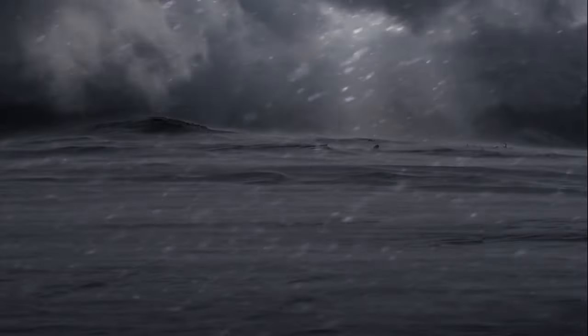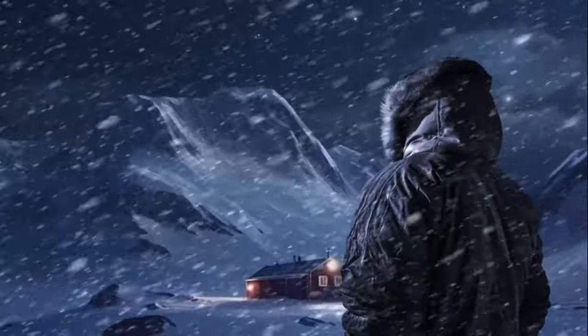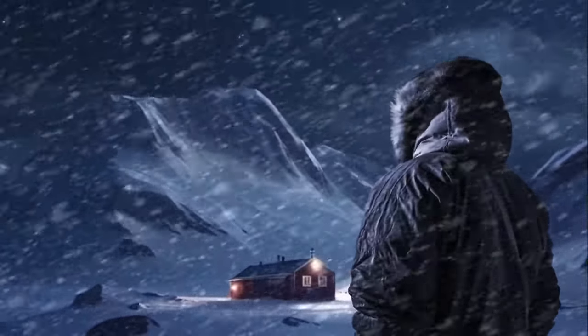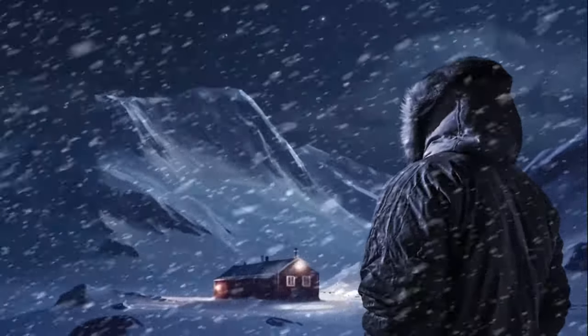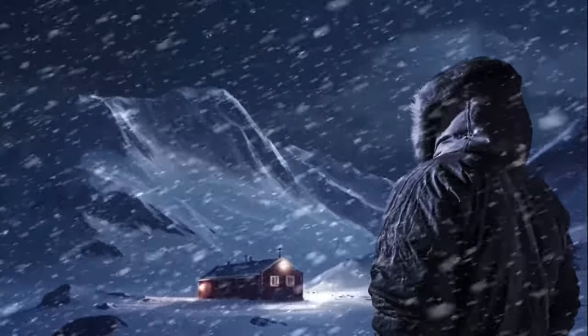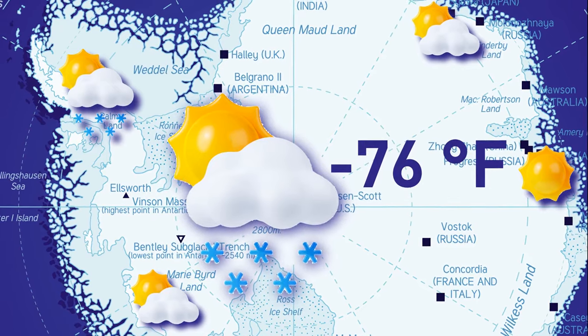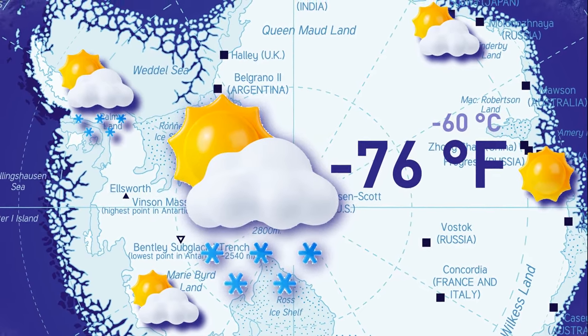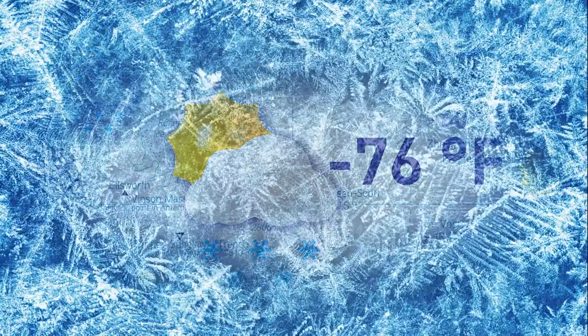Now, technically, can you live in Antarctica? While there are no laws banning people from living there permanently, it's a very inhospitable environment and unsuitable for human habitation. Temperatures can reach negative 76 degrees Fahrenheit and below, making it nearly impossible for anyone to survive without the proper equipment and experience.